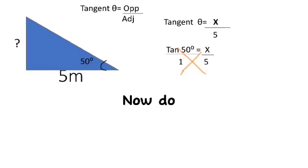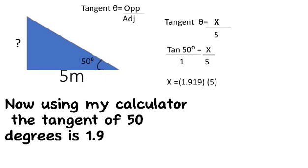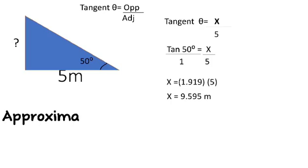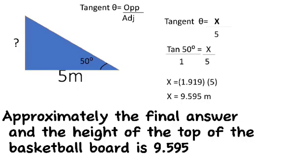Now do cross multiply. Now using my calculator, the tangent of 50 degrees is 1.919. Now multiply it by 5. Approximately, the final answer and the height of the top of the basketball board is 9.595 meters.